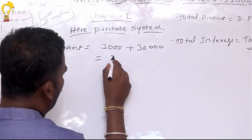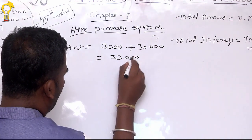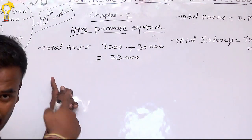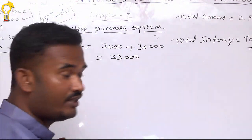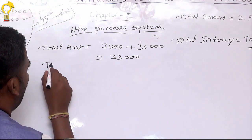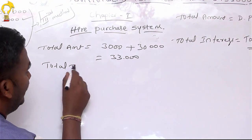What is this? 300. Why is this? Total amount — what is this? Total amount. Next: total interest.